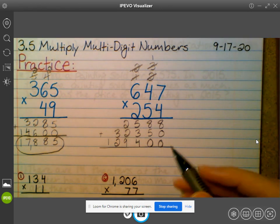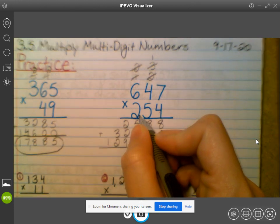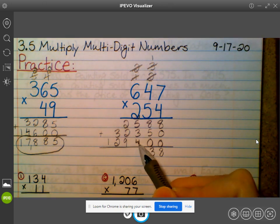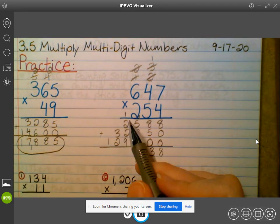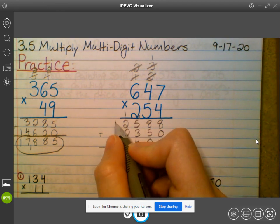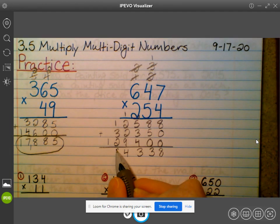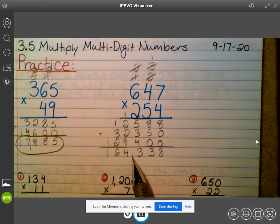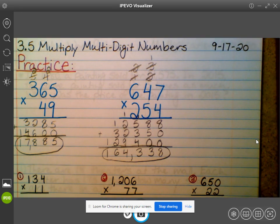Then we add. Eight plus zero plus zero is eight. Eight plus five plus zero is 13. So I'm going to carry the one, bring down the three. Five plus three is eight plus four is 12 plus one is 13. Carry the one, bring down the three. Two plus two is four plus nine is 13 plus one is 14. Three plus two is five plus one is six. And then we bring down our one. So then, we add our zero, we go three digits in, we get 164,338. That's a larger number than we're used to dealing with.